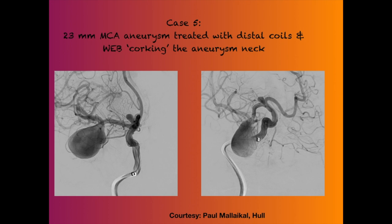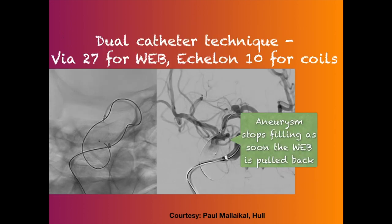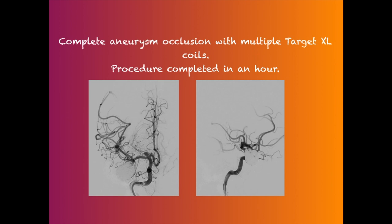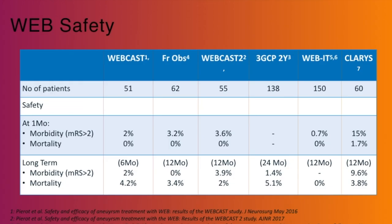For a large aneurysm, you can cock the aneurysm by placing some coils distally with the catheter and then treat it with WEB — the aneurysm completely occluded. You can be very quick in treating these large aneurysms this way.